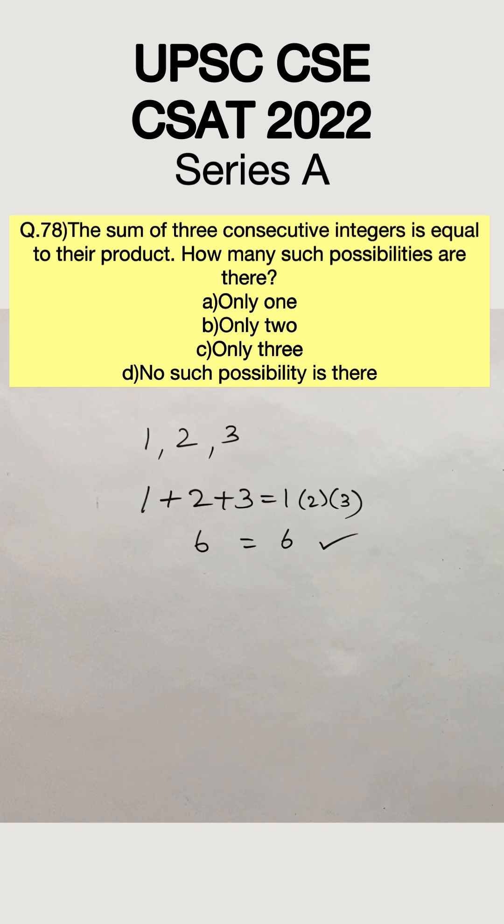So now we can conclude that anything higher than 1, 2, 3 will not satisfy the given condition. So let's check with lesser than 1, 2, 3.